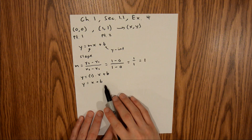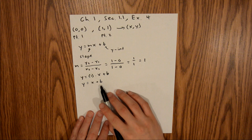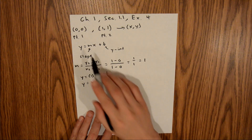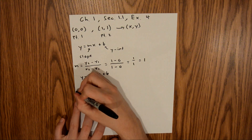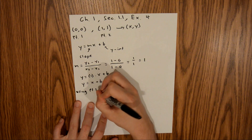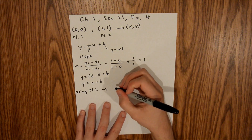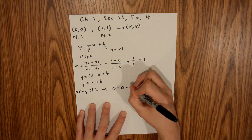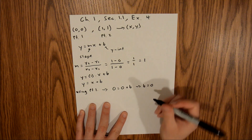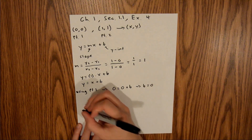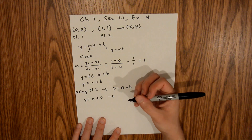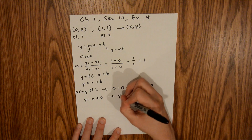Now we need to find our y-intercept. To do that, plug in one of the two points — it doesn't matter which. I'll choose point 1, which is (0, 0). That gives 0 equals 0 plus b, which means b equals 0. Plugging that back in, we get y equals x plus 0, so the equation is y equals x.